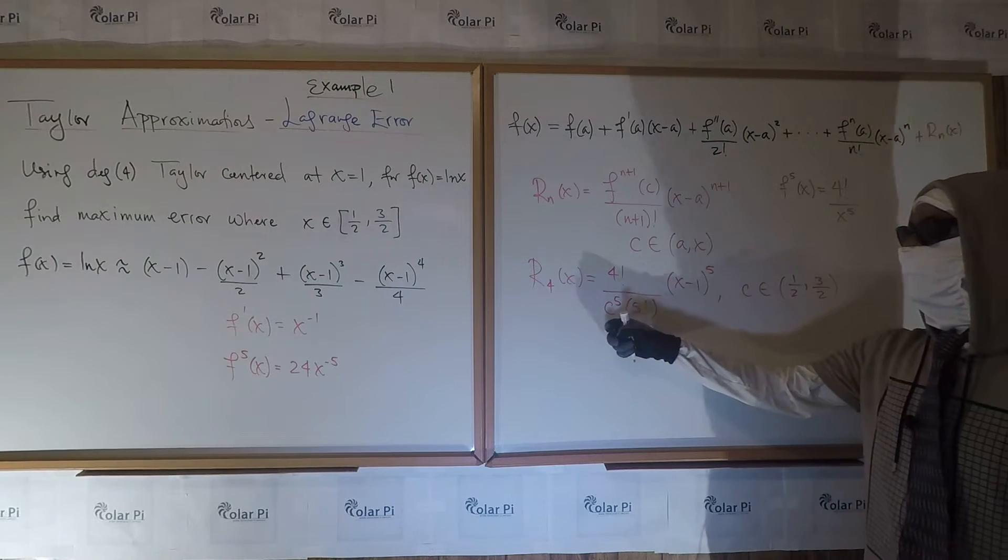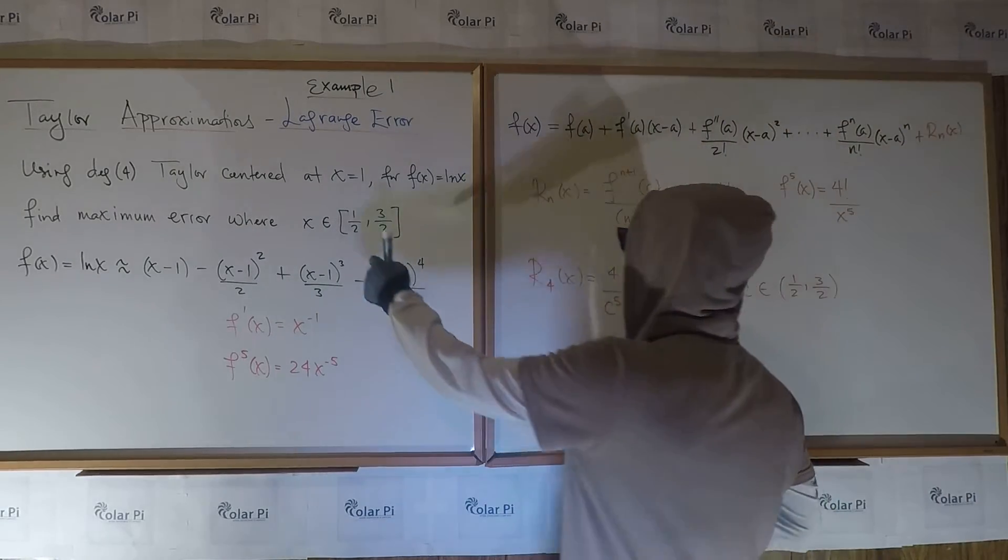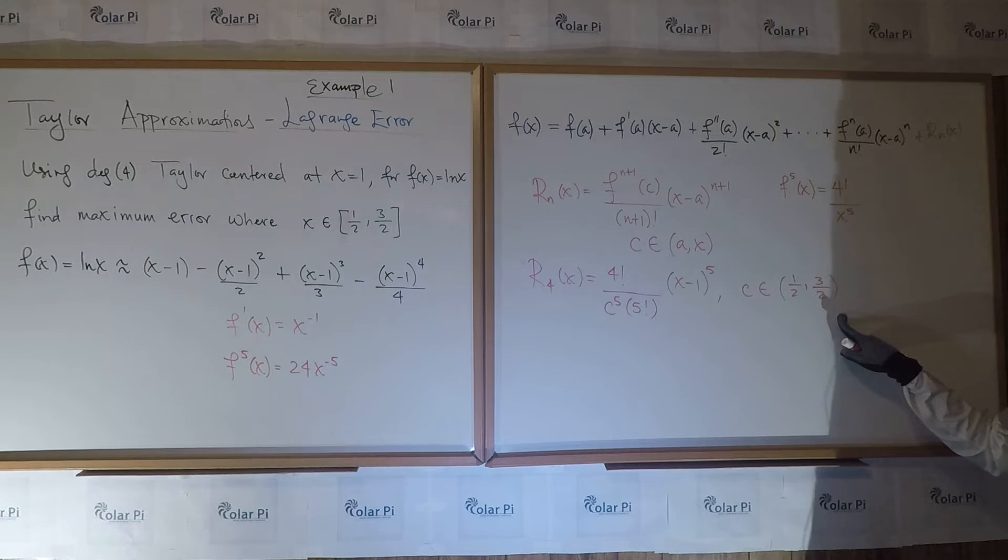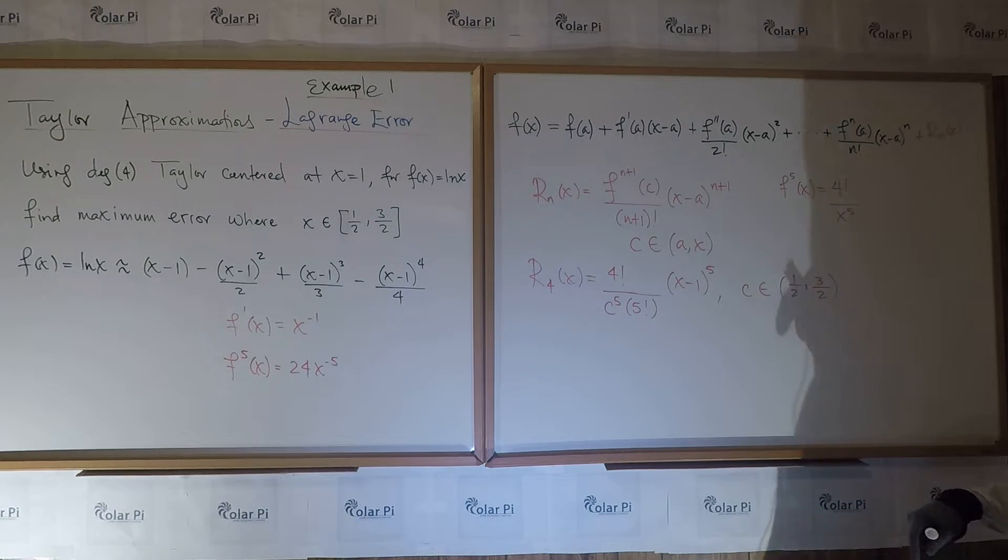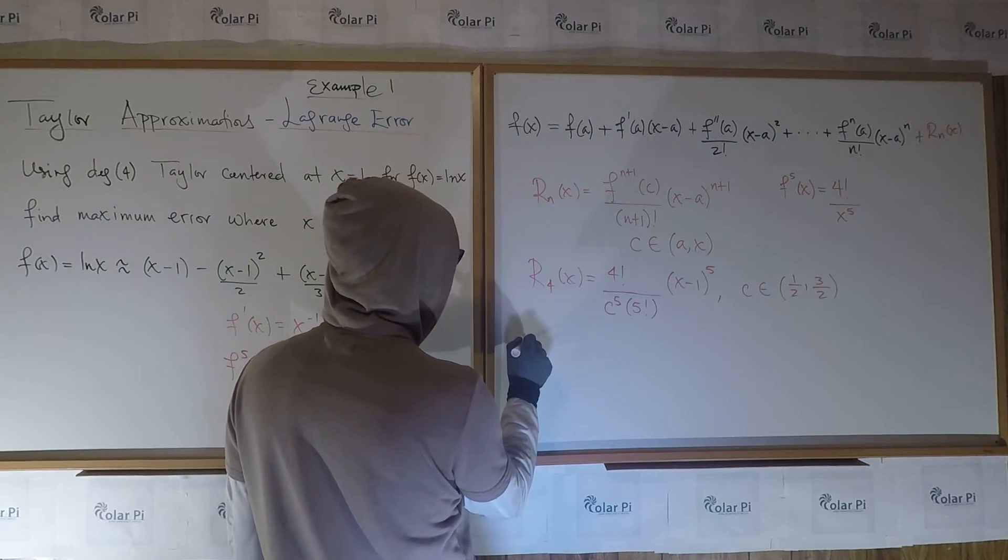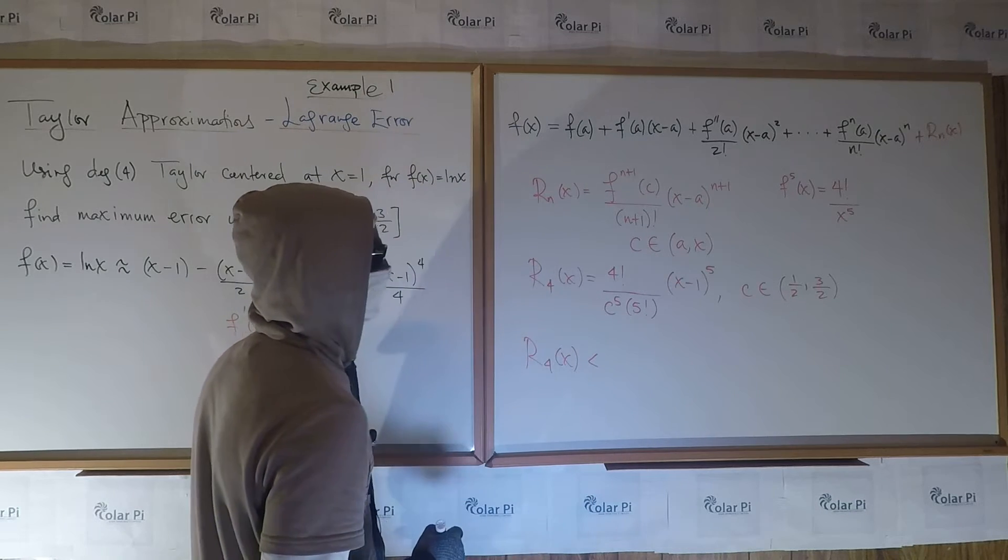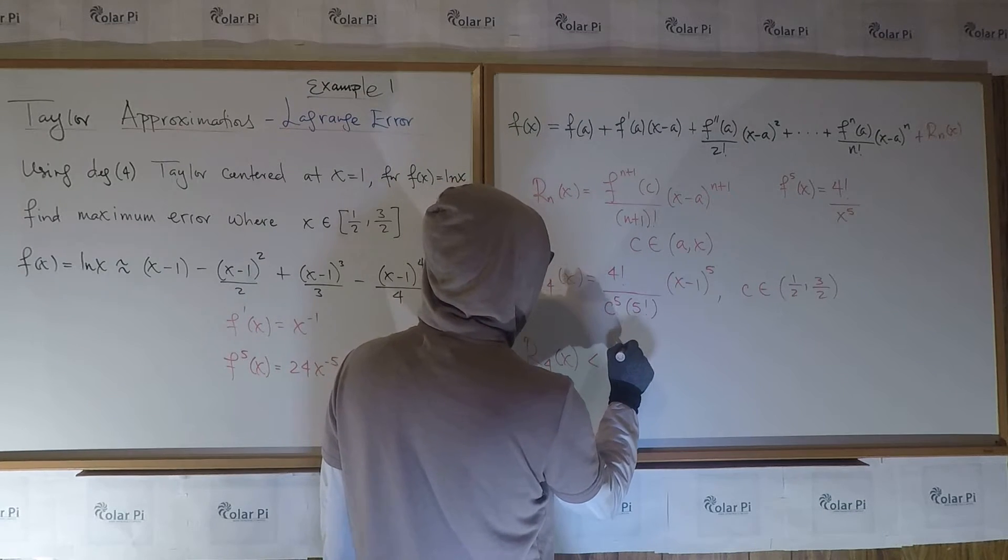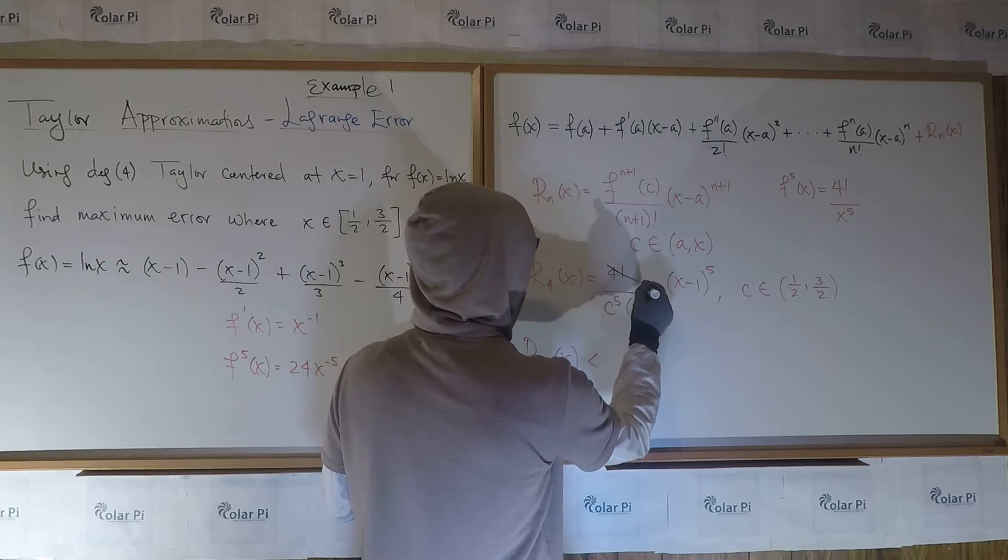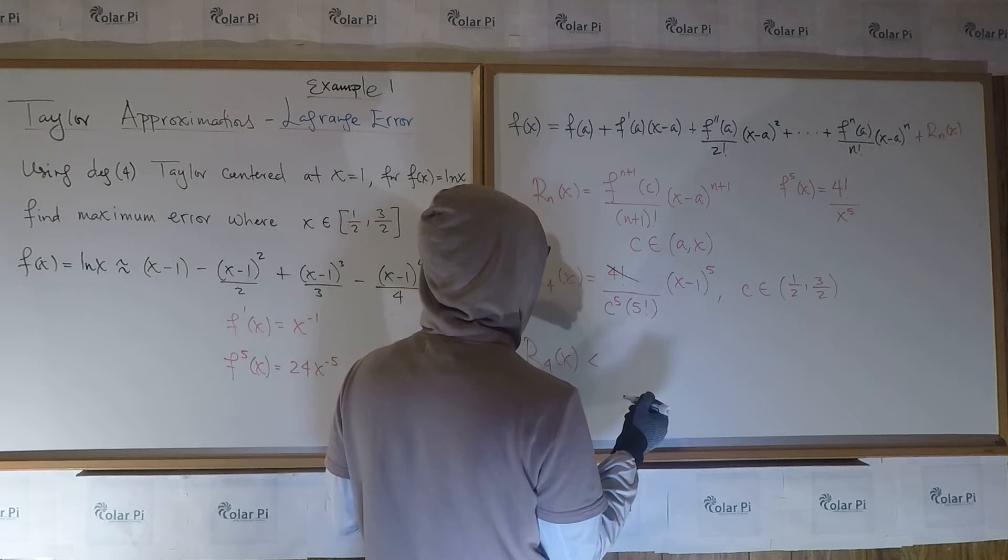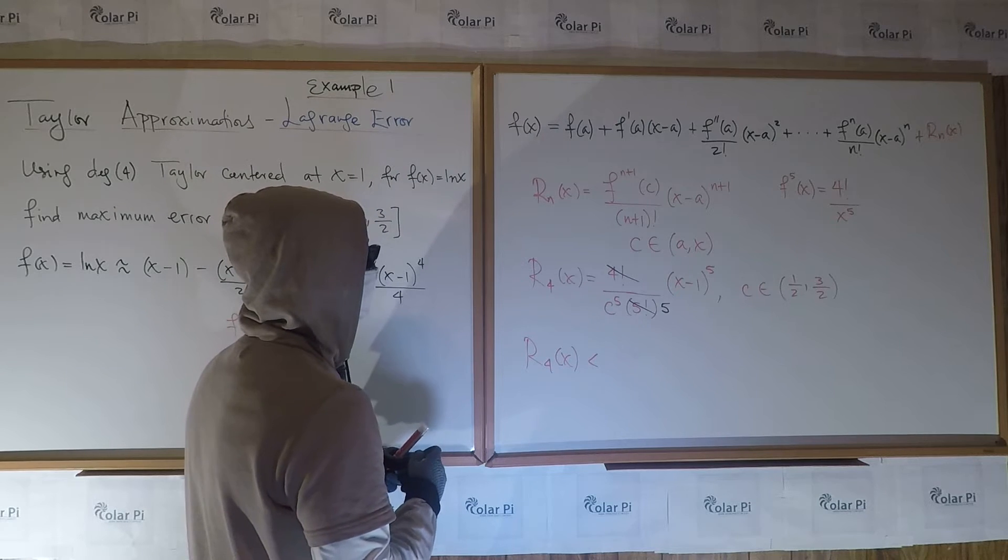And so how do we find the biggest this could be, given that c has to be in here and x has to be in the closed interval there. And c again in the open interval one-half to three-halves. Here, I go r4 of x in this case has to be strictly less than four factorial. By the way, I could do a little bit of simplifying here, which is I have four factorial here, and that's why I wanted to write 24 as four factorial, and five factorial here, so five in the denominator survives.